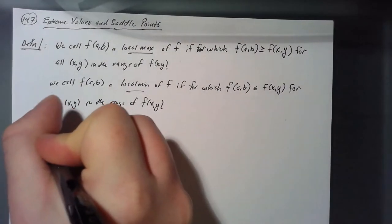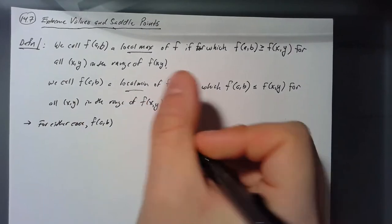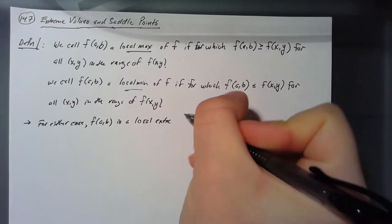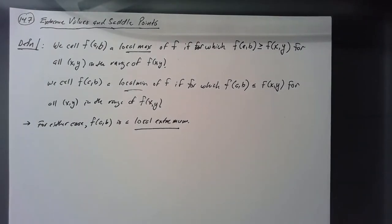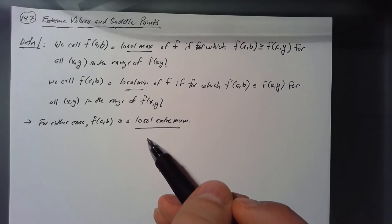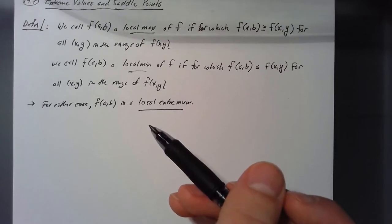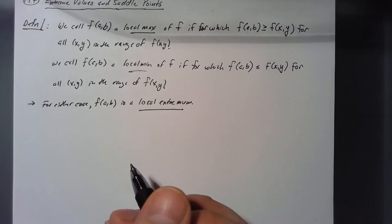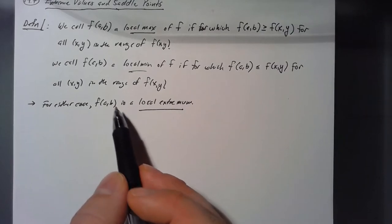In either case, f(a,b) is called a local extremum. To find local maxima and minima, we first identify critical points. In Calc 1 we took the derivative and set it equal to zero; now we take two first-order partial derivatives and set them equal to zero, because we have two variables. In some cases we have three variables and take three derivatives.